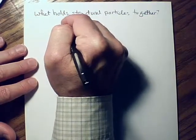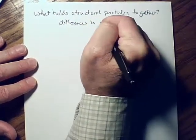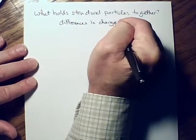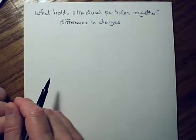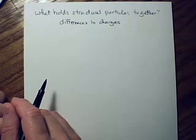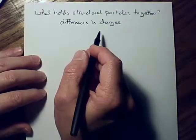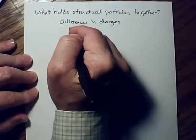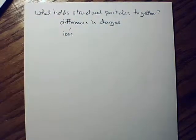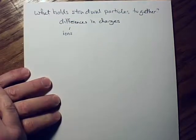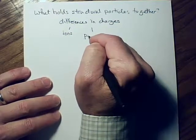What holds structural particles together — or doesn't hold them together in the case of a gas — is differences in charge. Positives are attracted to negatives; that's what holds everything together for solids, liquids, and gases. Those differences in charge might be ions, as in the case of an ionic substance.